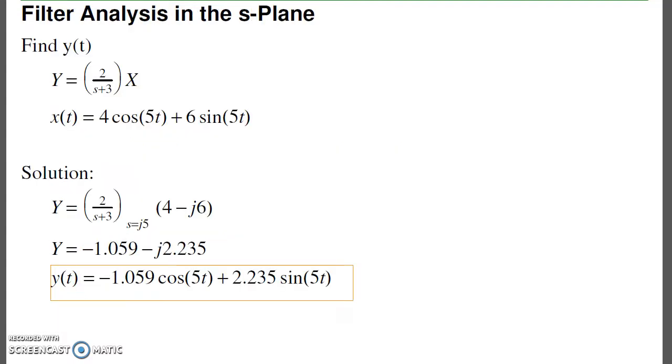To analyze filters in the s-plane, I plug in s = jω. For example, if I have this filter and the input is 4cos(5t) + 6sin(5t), I'll plug in the frequency I care about, which is j5. All I care about is what's the gain at s = j5, times the input at j5. Multiply those out, I get a complex number where the real part means cosine and minus j means sine. This is filter analysis in the s-plane.